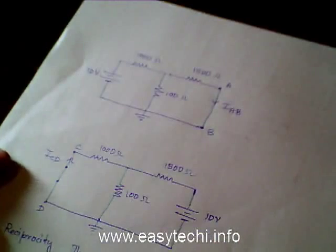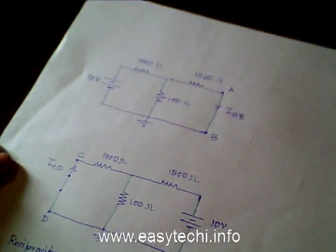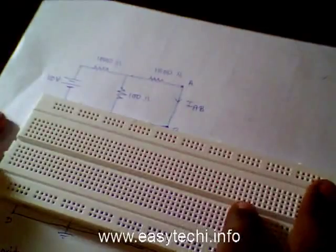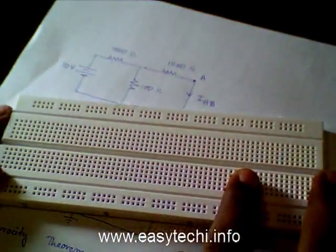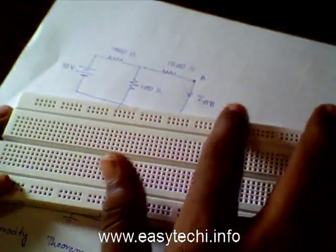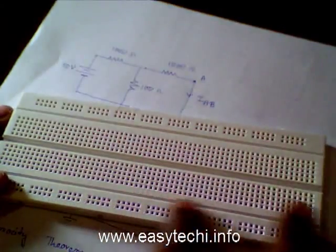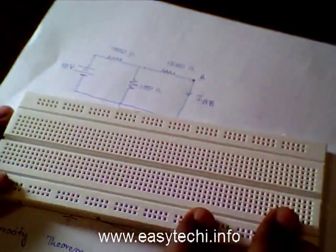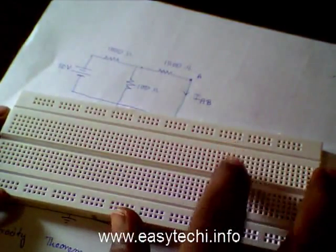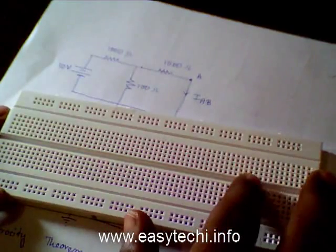To conduct the experiment, we have a breadboard. As you may know, the breadboard is vertically shorted in the middle part, horizontally shorted at the top and bottom rails, and these two rails are actually separated from each other.